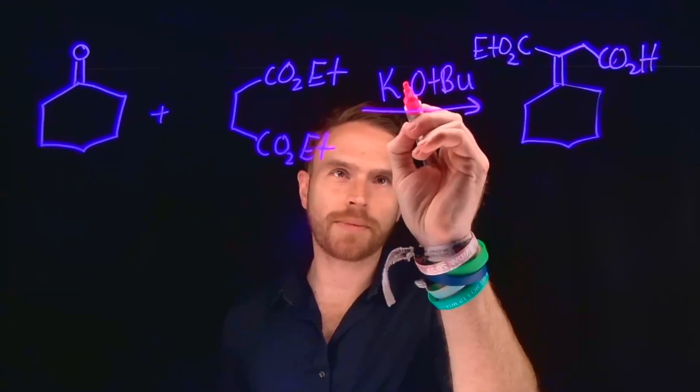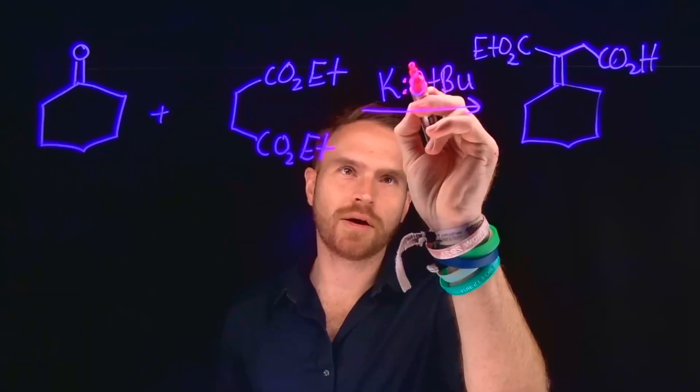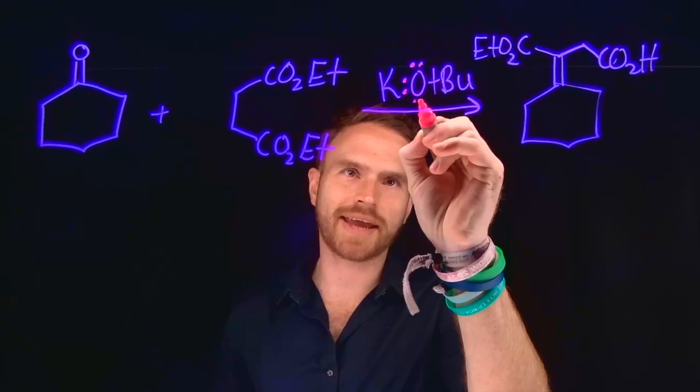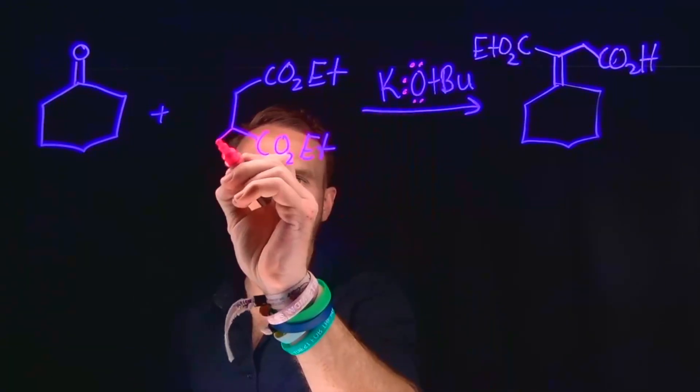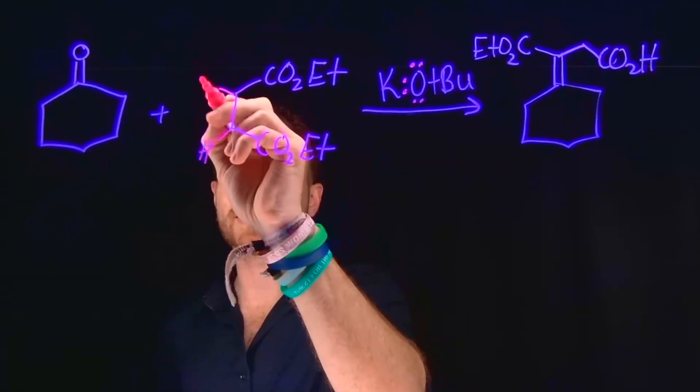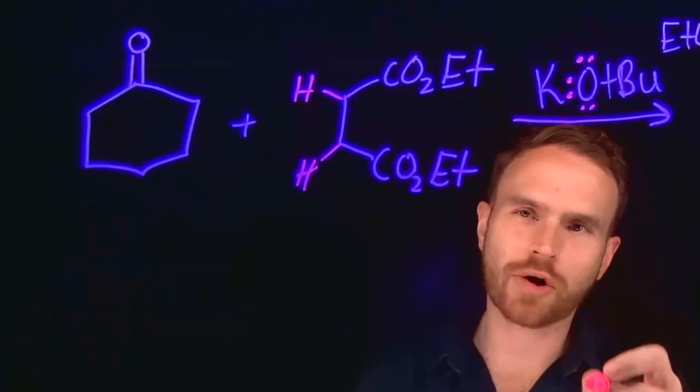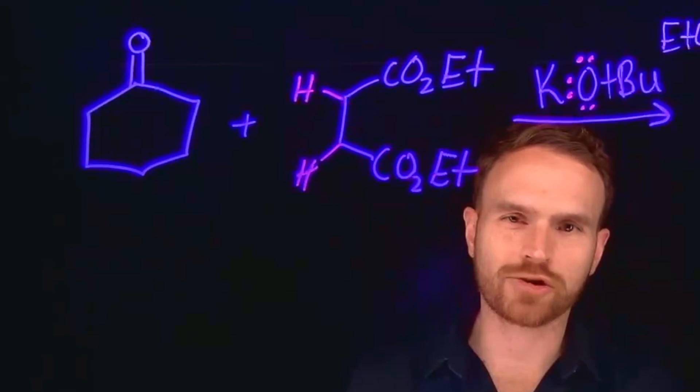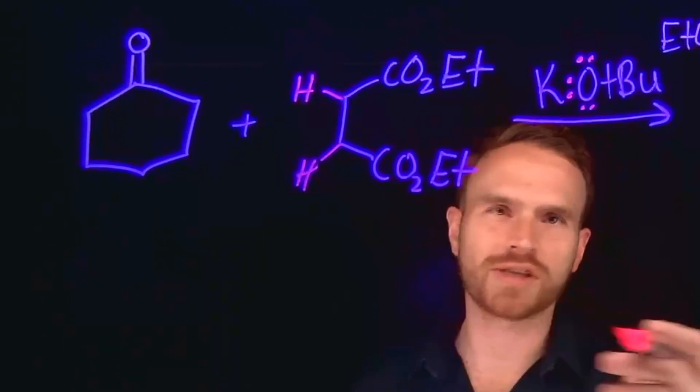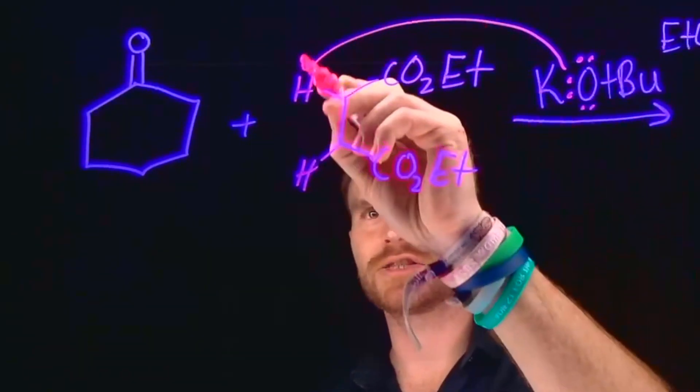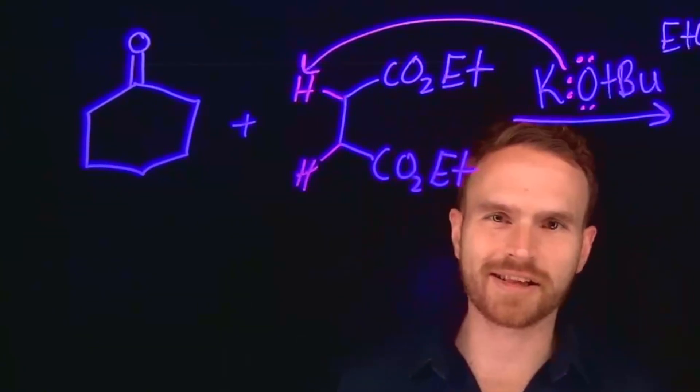The first step in this transformation is probably what you would expect, where the potassium tert-butoxide can act as a base to deprotonate either of the alpha carbon hydrogens at these carbon positions, which are adjacent to the esters. This is because those electron-withdrawing groups are going to make those alpha carbon hydrogens highly susceptible to nucleophilic attack because they're more acidic. So that is the first step in this transformation where you're forming an enolate species.